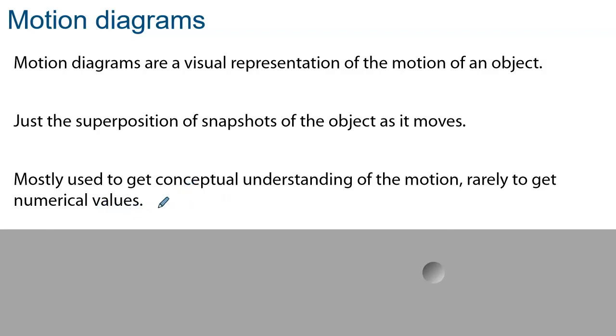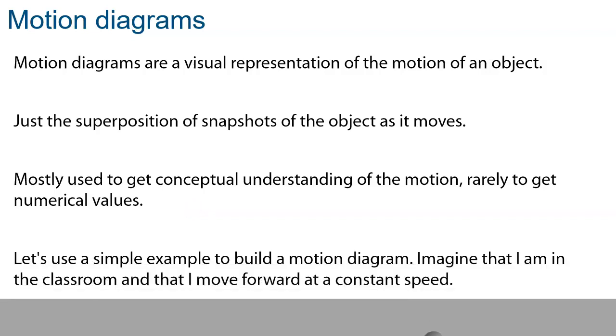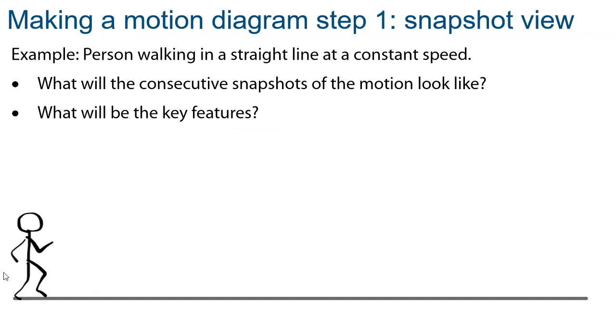What we'll be looking for is when is the object speeding up, when is the object slowing down, what's going on, what's the change in direction? To be able to introduce the motion diagram, imagine I am in front of the classroom and I move forward at a constant speed. We have a person walking in a straight line at constant speed. What will the consecutive snapshots of the motion look like? What will be the key features?